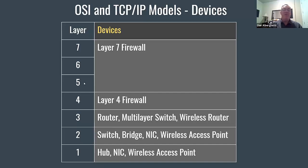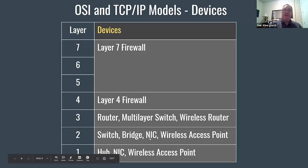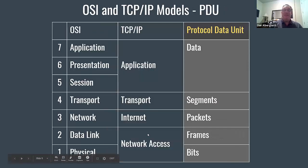At layers four through seven, you have firewalls — a layer four firewall or a layer seven firewall. A layer seven firewall is a fancy firewall that can actually inspect packets at the application layer and look at the programs as packets go across the network. Notice that NICs and wireless access points appear at both layer one and layer two, which is why the network access layer involves both.